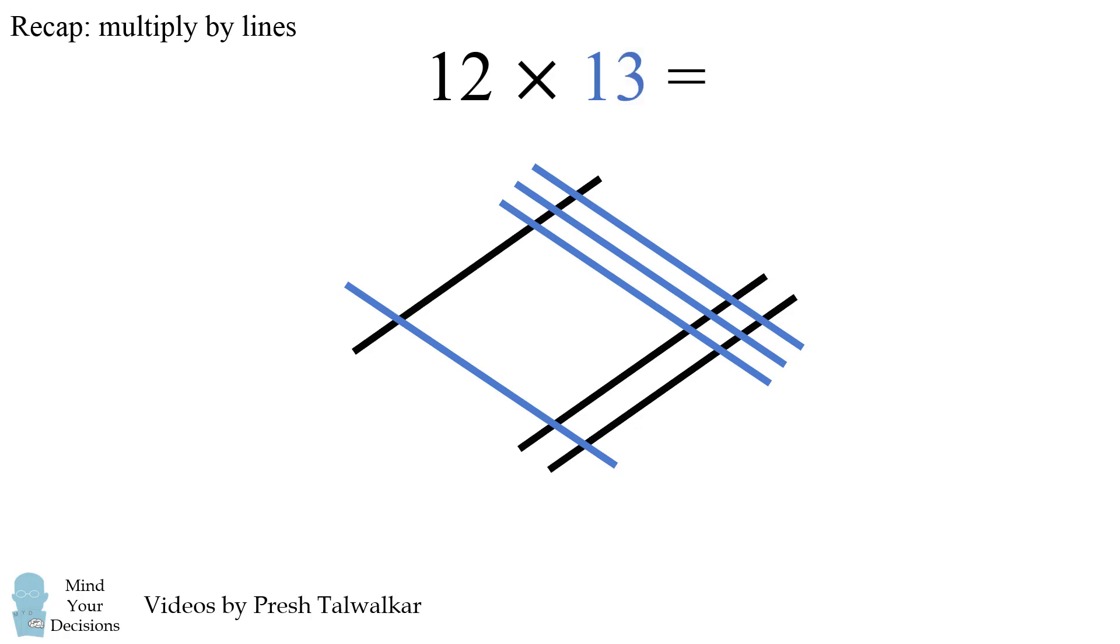Now we will group vertically aligned intersections. Then we'll count the number of intersections. On the far right, there are a total of six intersections.